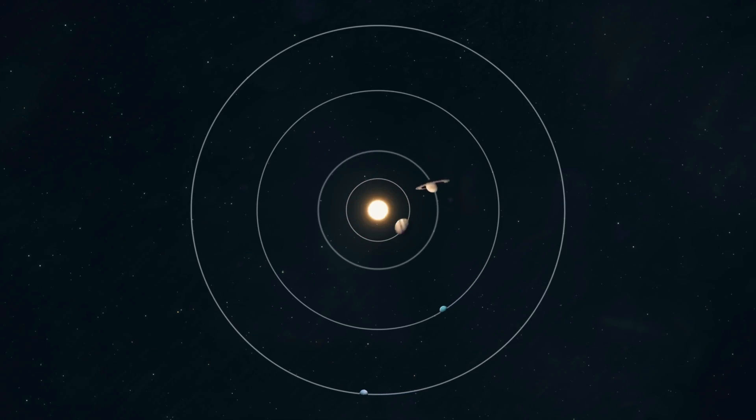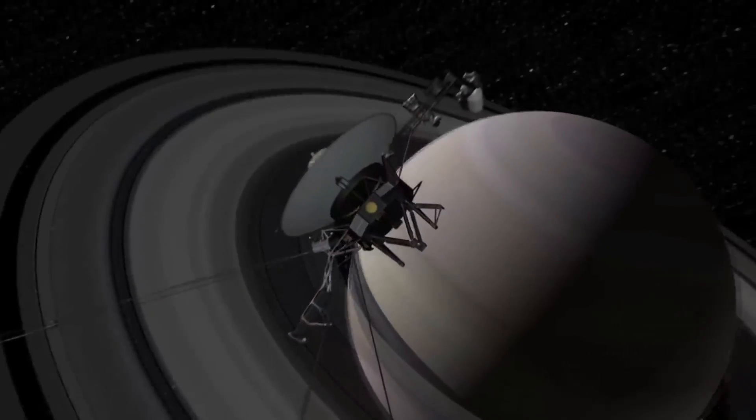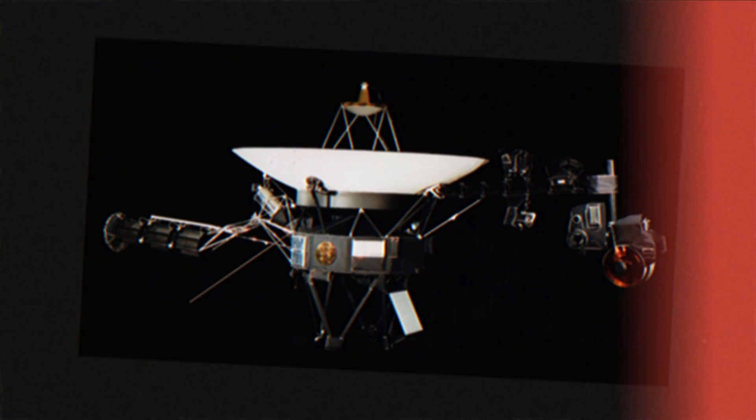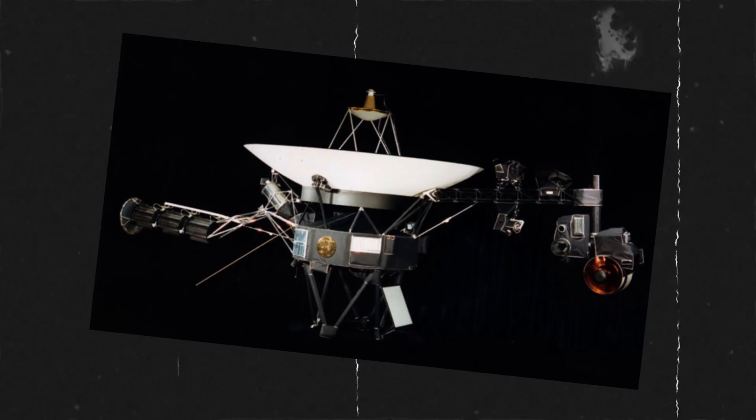After the successful launches and missions of Voyager 1 and 2 in 1977, there were plans for a Voyager 3 spacecraft. However, this idea was ultimately scrapped due to a combination of factors.